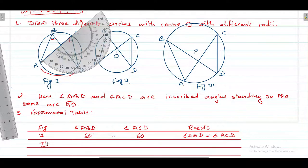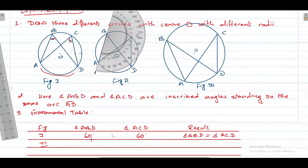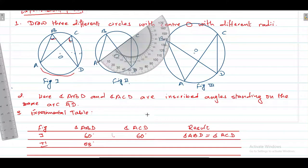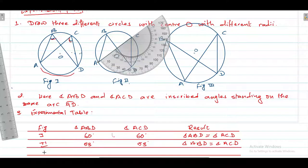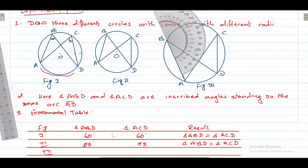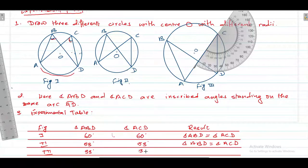In figure two, by the same process, angle ABD is 53 degrees and angle ACD is also 53 degrees, so as a result angle ABD is equal to angle ACD. Now in figure three, angle ABD equals 33 degrees and angle ACD equals 33 degrees, and as a result angle ABD is equal to angle ACD.